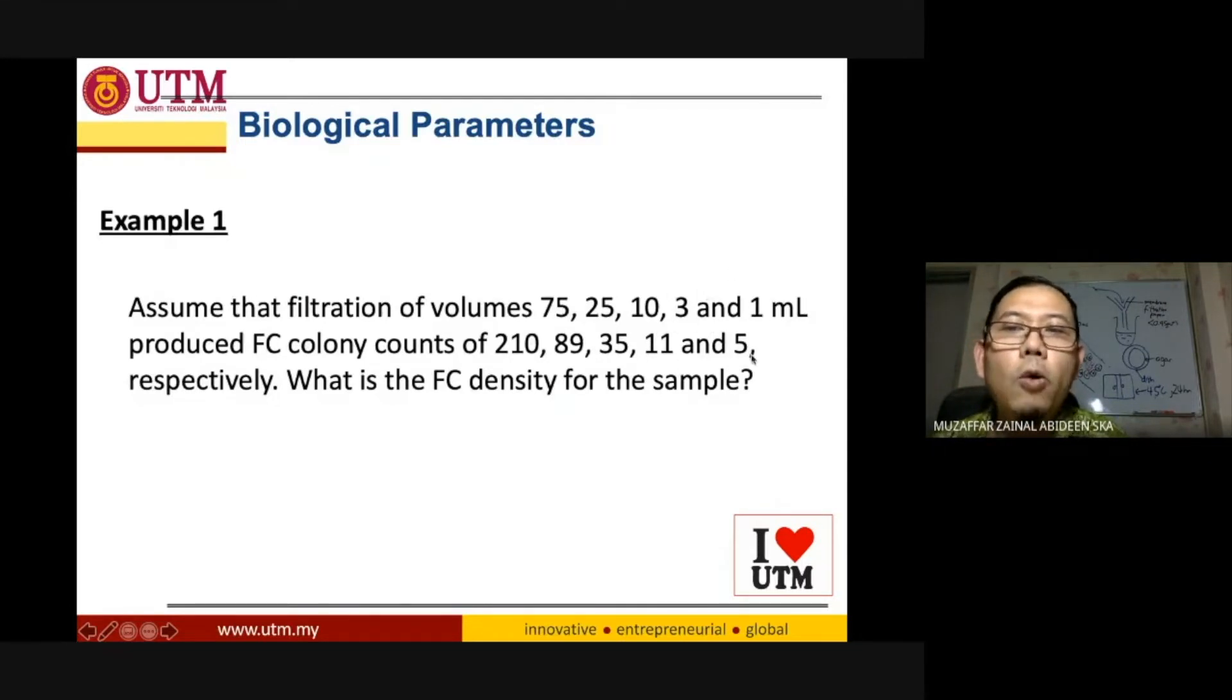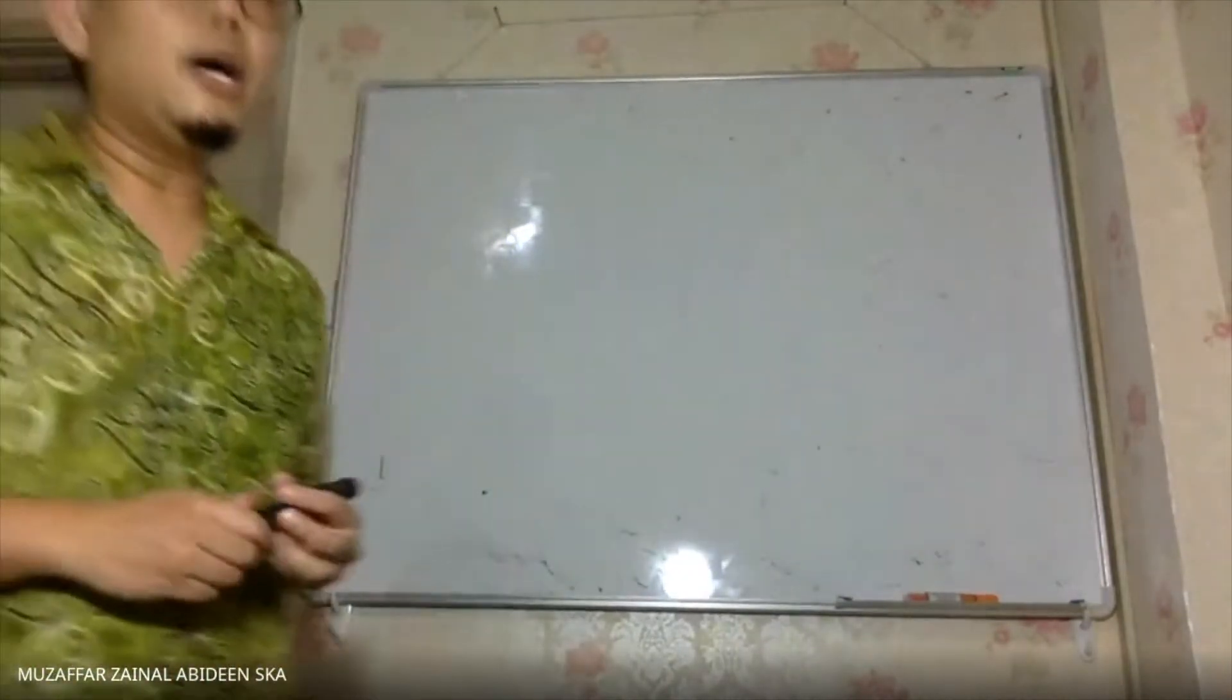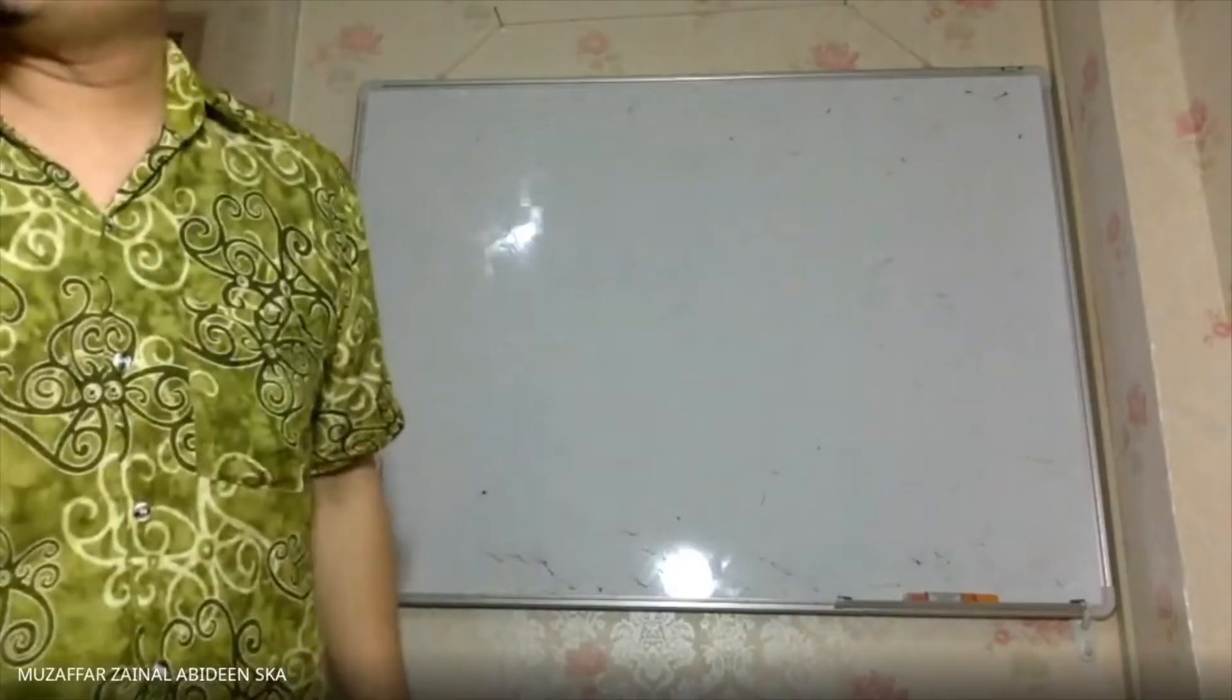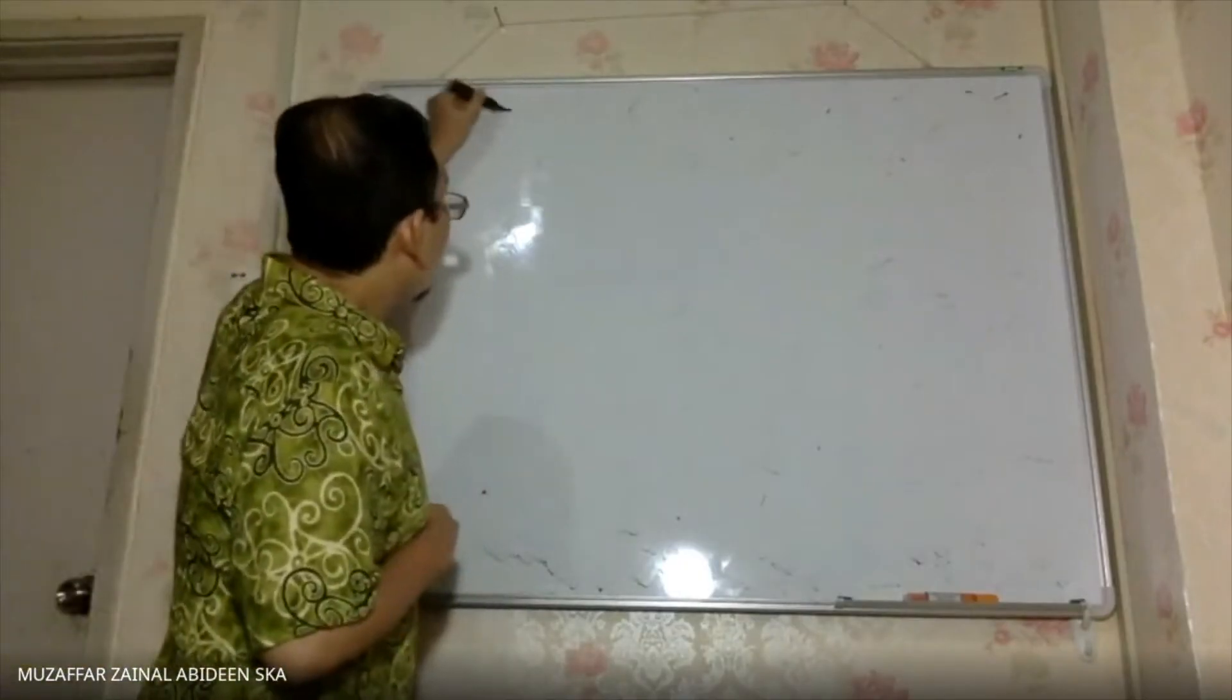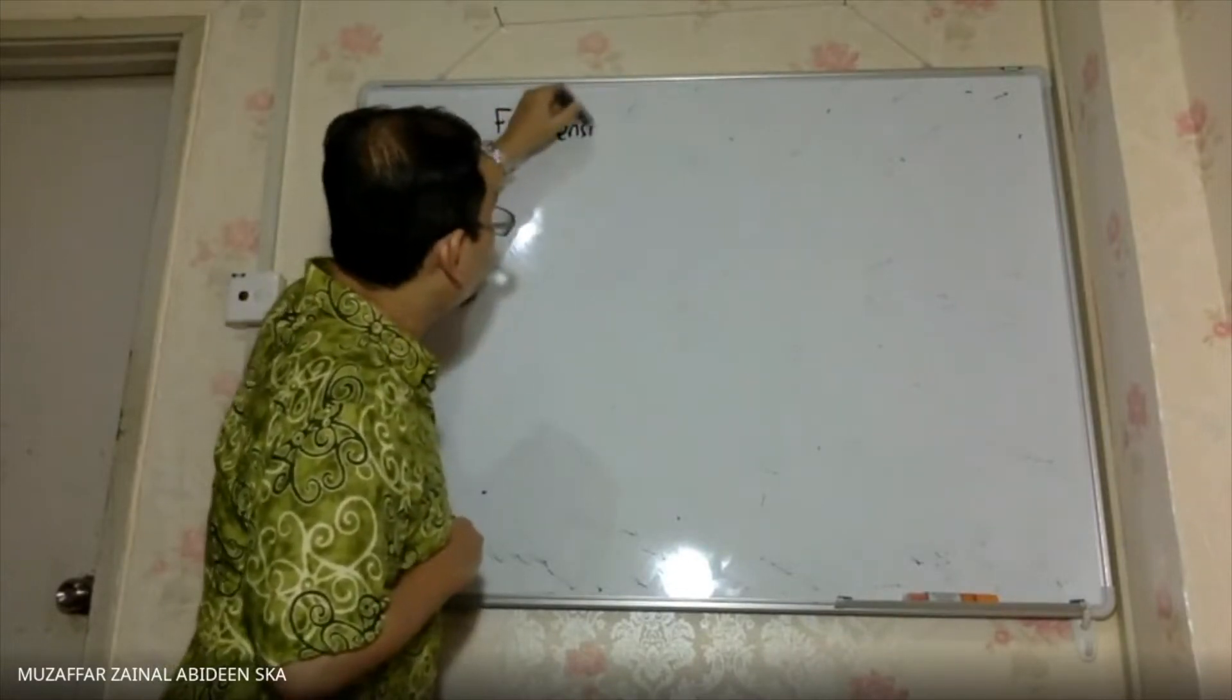So what is the FC density of the sample? I'd like to bring back to my whiteboard to show the solution of this example. Alright, they were asking you on how to determine the fecal coliform density. The FC density, that is what they want you to find out.